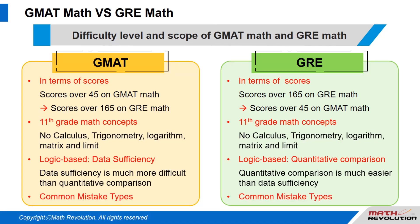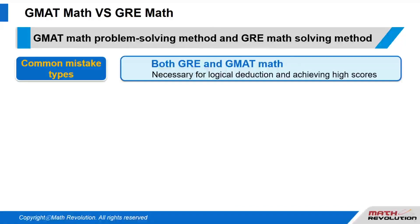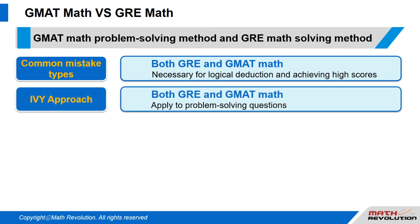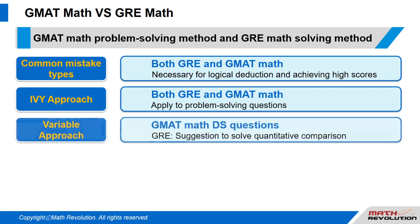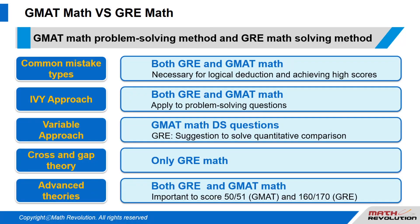There are common mistake types for both the GMAT math and GRE math. Understanding these common mistake types is necessary for logical deduction and achieving high scores. The variable approach applies to problem-solving questions on both the GMAT math and GRE math. It can be applied to solve data sufficiency questions on the GMAT, but it only offers suggestions for solving quantitative comparison questions on the GRE. The cross-theory and gap-theory are also important for GRE math. These theories are necessary to achieve scores above 50 or 51 on the GMAT and scores above 160 to 170 on the GRE.